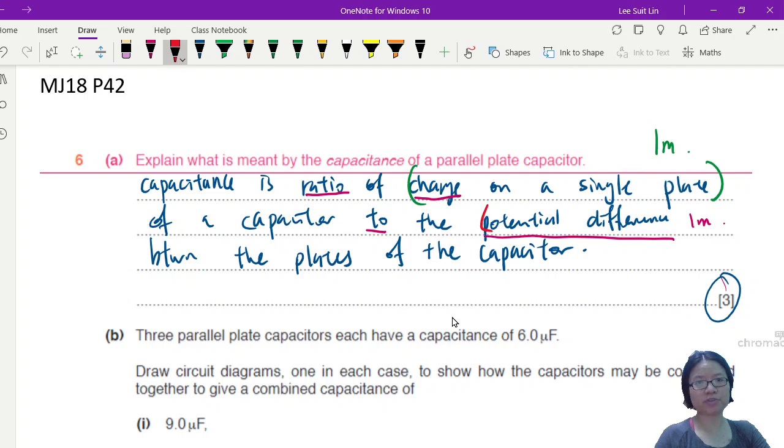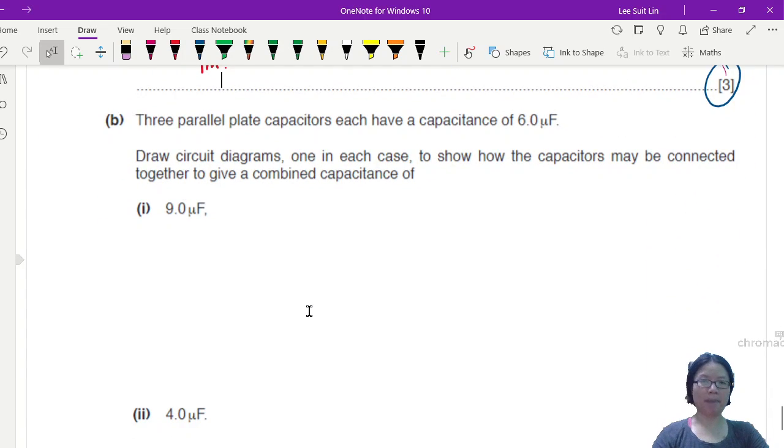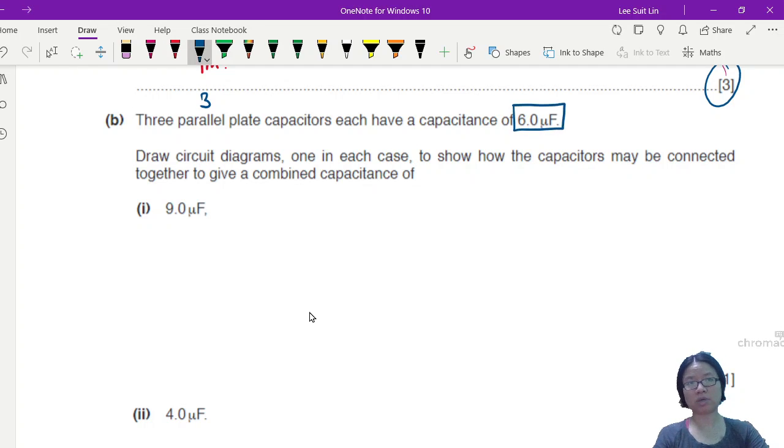Potential difference between the plates of the capacitor, especially the word 'between,' one mark. Three marks. Alright, part B: three parallel plate capacitors have a capacitance of six microfarad.